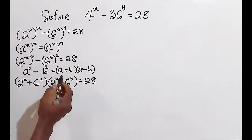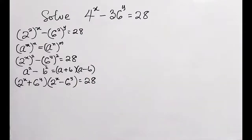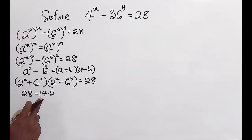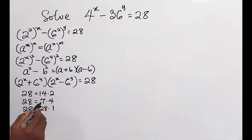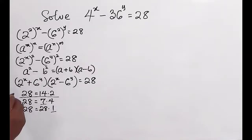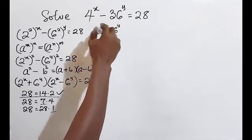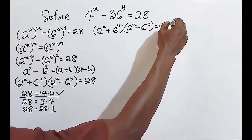Since we need two even numbers, and the sum must be greater than the difference, the factor pairs of 28 are: 14 × 2, 7 × 4, and 28 × 1. The pairs 7 × 4 and 28 × 1 are not both even, so the only valid option is 14 × 2. Therefore, (2^x + 6^y)(2^x − 6^y) = 14 × 2.